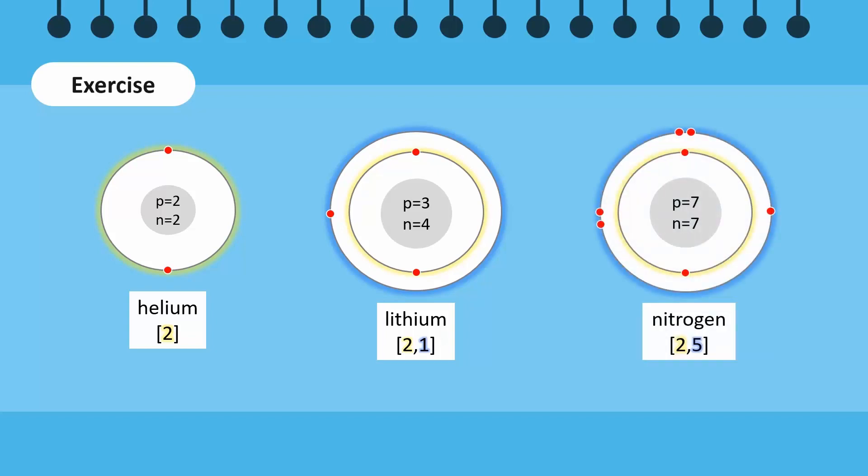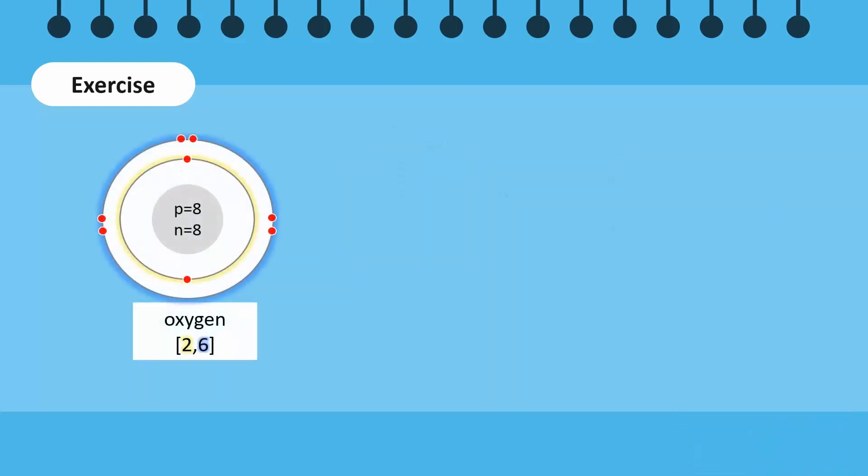Nitrogen has 7 electrons, 2 in the first shell and the remaining 5 in the second. Oxygen has 8 electrons, 2 in the first shell and the remaining 6 in the second shell.